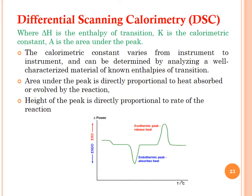The calorimetric constant varies from instrument to instrument and is determined by analyzing a well-characterized material with known enthalpy of transition. The area under the peak is directly proportional to the heat absorbed by the reaction, and the height of the peak is directly proportional to the rate of reaction. In the DSC curve, minima represent endothermic peaks — where heat is absorbed — while maxima represent exothermic peaks — where heat is released.